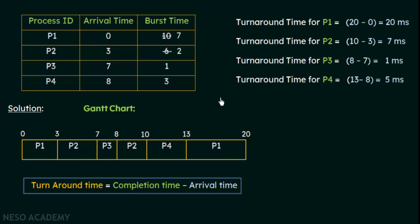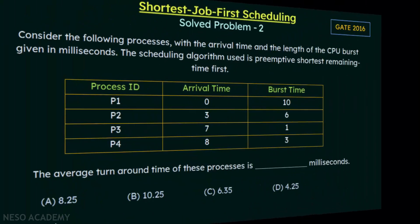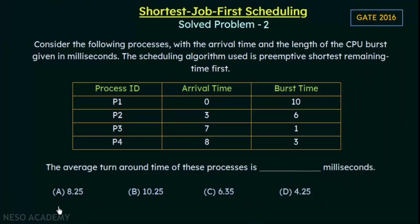The average turnaround time is (20 + 7 + 1 + 5) / 4 = 33 / 4 = 8.25 ms. Looking back at the options, option A is 8.25, which matches our solution. So option A is the correct answer for this question. The average turnaround time for this set of processes under preemptive shortest remaining time first scheduling is 8.25 milliseconds.